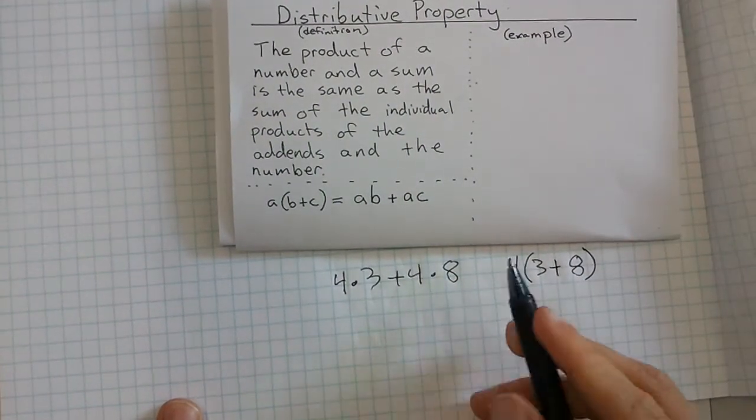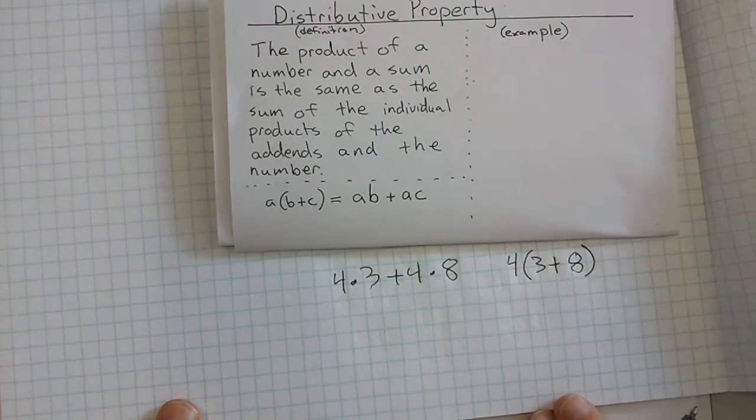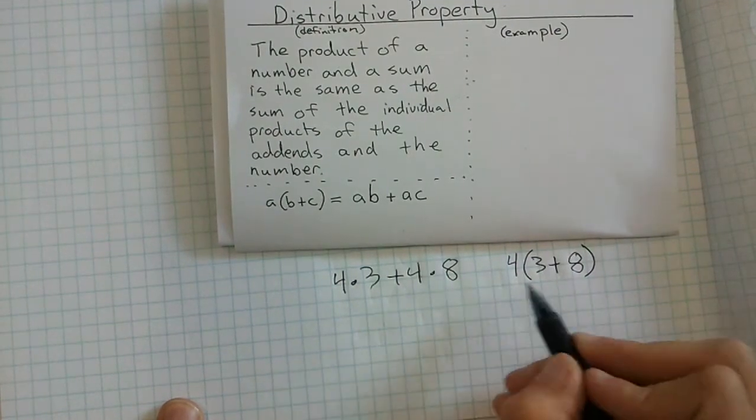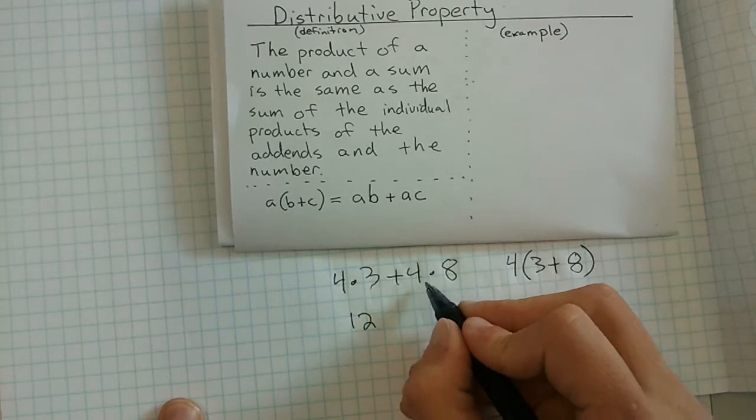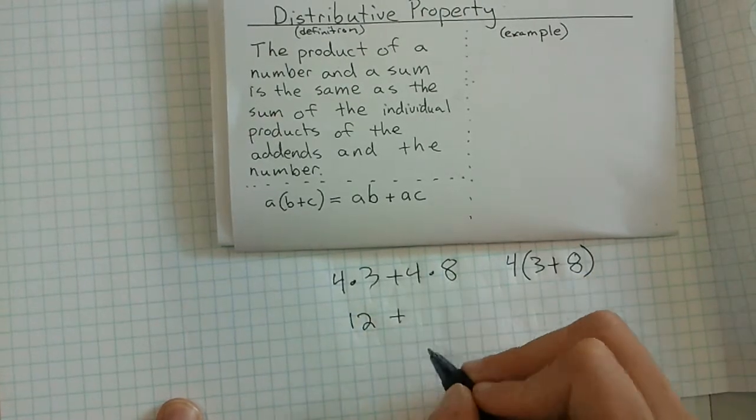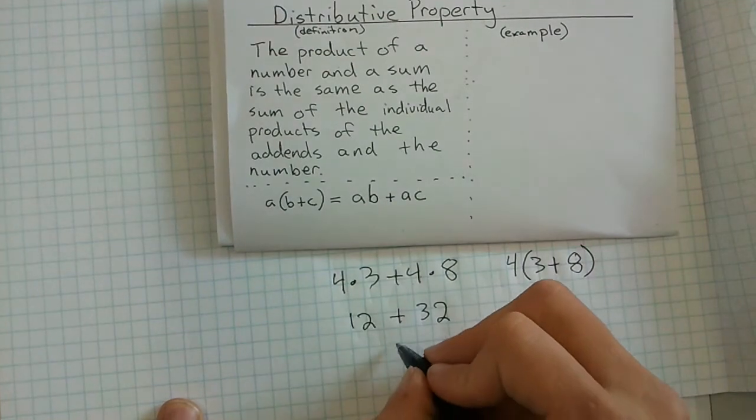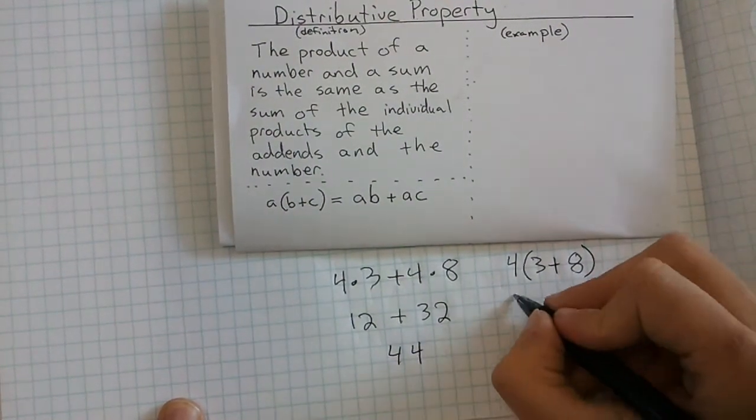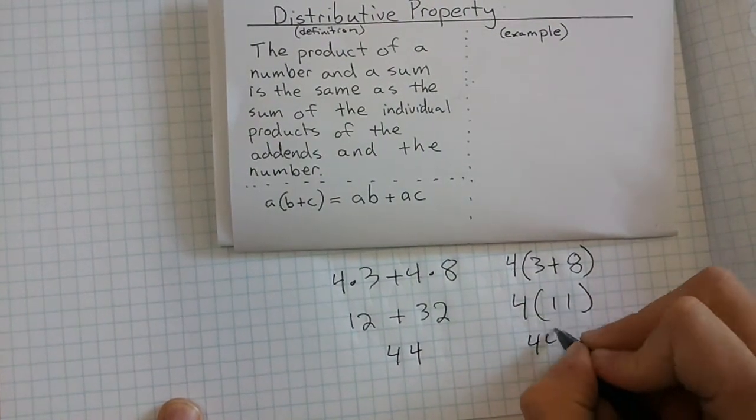Now I would say I've rewritten the problem using the distributive property, and now I would just use order of operations to check to see if they actually were equal. 4 times 3 gives me 12 plus 4 times 8 is 32, so we are looking at 44. Same thing: 4 times 11 gives me 44, and I have the same thing.